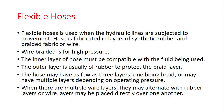Flexible hoses are used in hydraulic systems when the hydraulic lines are subject to movement. Hose is fabricated in layers of synthetic rubber and braided fabric or wire. The inner layer must be compatible with the fluid used — for example, a different hose is needed for water versus hydraulic oil. The outer layer is usually rubber to protect the braided layer.